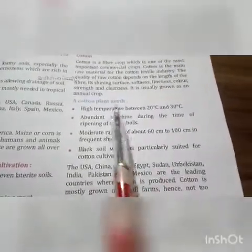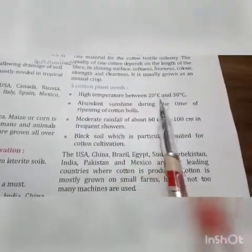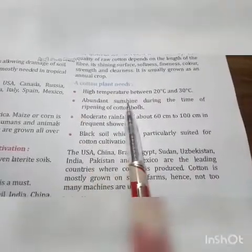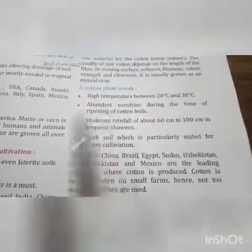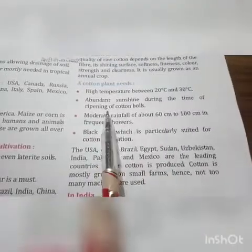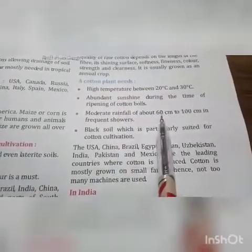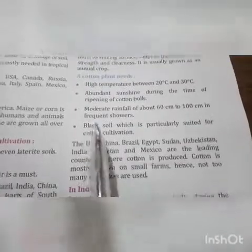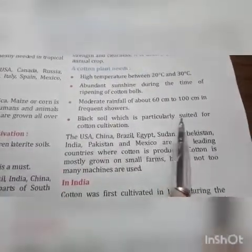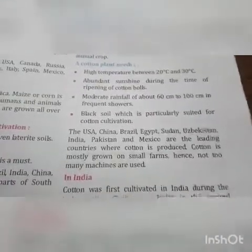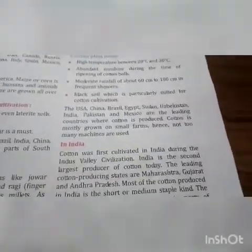A cotton plant needs: high temperature between 20 to 30 degrees; abundant sunshine during the time of ripening of cotton bolls; moderate rainfall of 60 cm to 100 cm; and black soil, which is particularly suited for cotton cultivation.